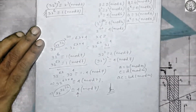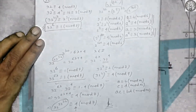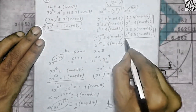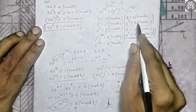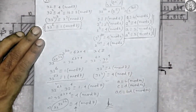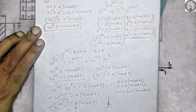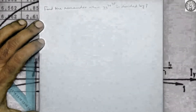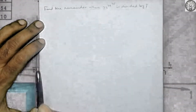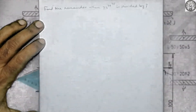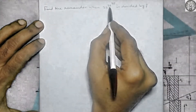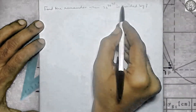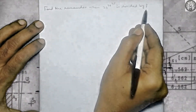In this problem, the most important observation you have to remember is the property about 4 modulo 6. Please try to remember this. Now let us take another problem of this kind. The question is: find the remainder when 33 to the power 34 to the power 35 is divided by 7.